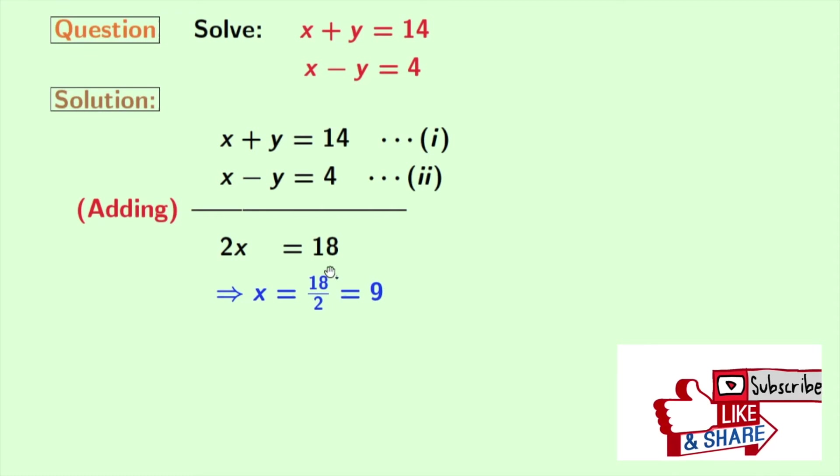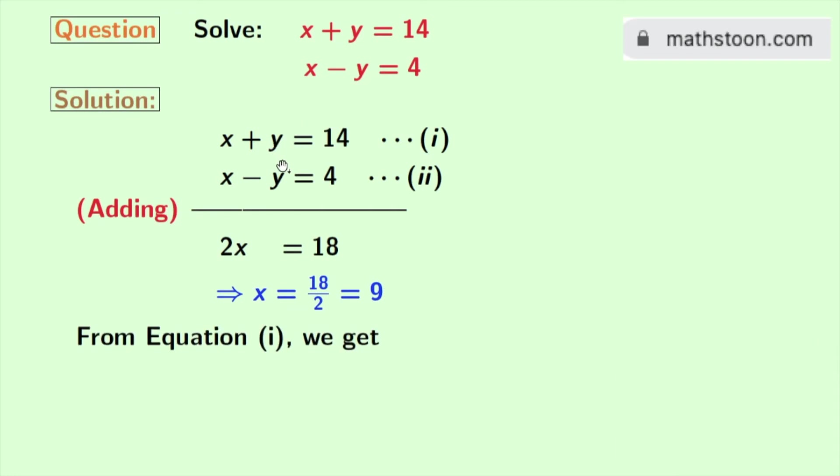Now we have to find the value of y. From equation 1, we get y is equal to 14 minus x. Now we will put the value of x here. So we get 14 minus 9 which is 5.